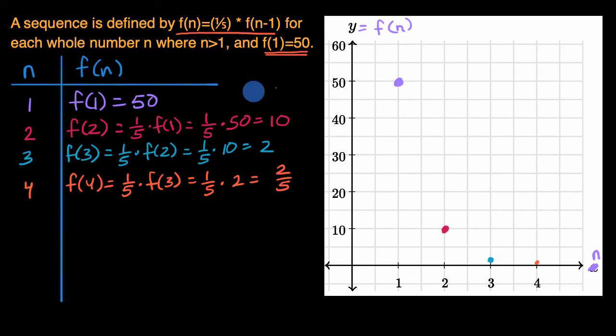If, on the other hand, you had an arithmetic sequence where each successive term is plus or minus some fixed amount of the previous term, then it will look more linear.